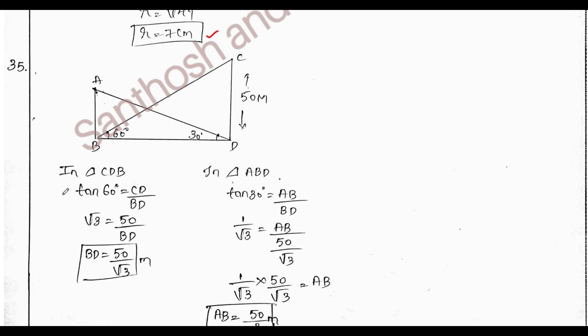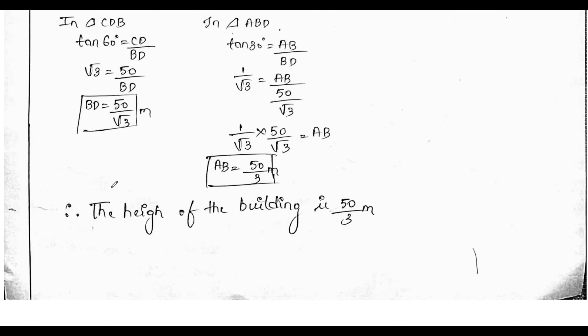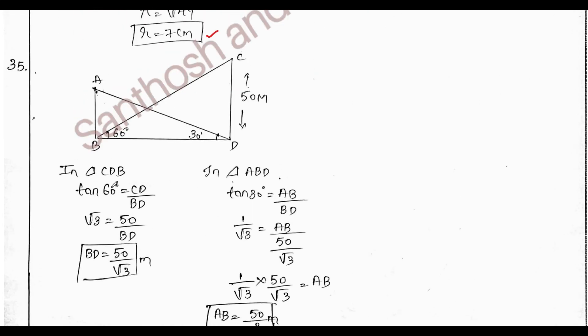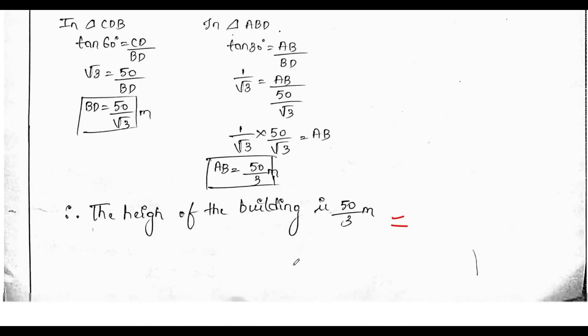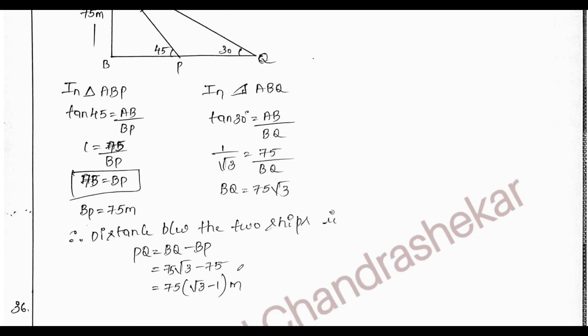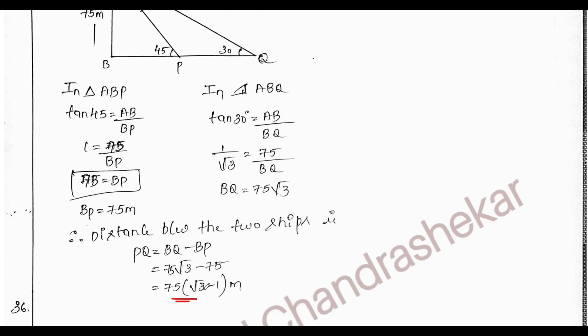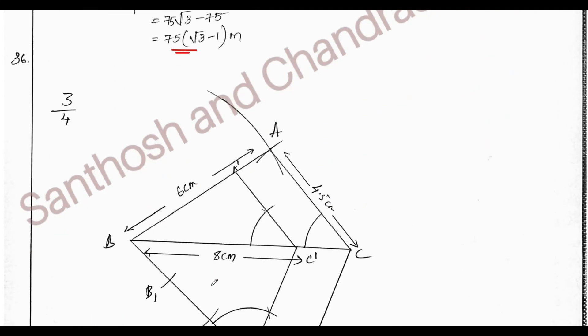Then the applications of trigonometry, both the questions are from my worksheet. The diagram is given. Very simple question. For 35th question answer is 50 by root 3, or another option is 75 root 3 minus 1 into meters.